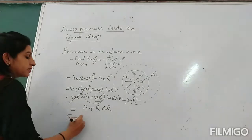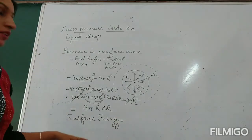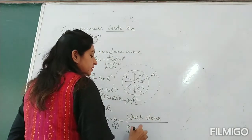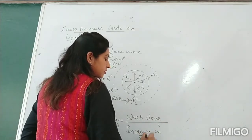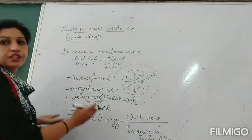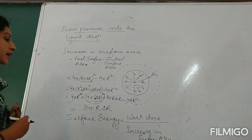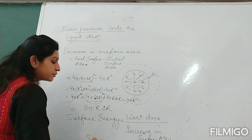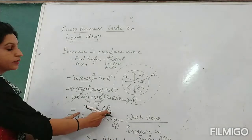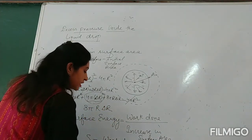Now we know the formula for surface energy. Surface energy is work done divided by increase in surface area. Numerically, surface energy is equal to surface tension. So if S is the surface tension of this liquid, we can write: S equals work done divided by increase in surface area, which is 8πR·δr. Therefore, work done equals S × 8πR·δr.